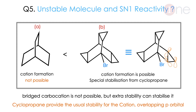Next: unstable molecule and SN1 reactivity. Two molecules A and B are given, differing only in the bridged cyclopropyl system. The cyclopropyl group has special stability because of its overlapping P orbitals. The compound with more cyclopropyl substitution is stabilized by the perpendicular P orbitals. Comparing A and B, B will have a faster reaction because of its cyclopropyl architecture.